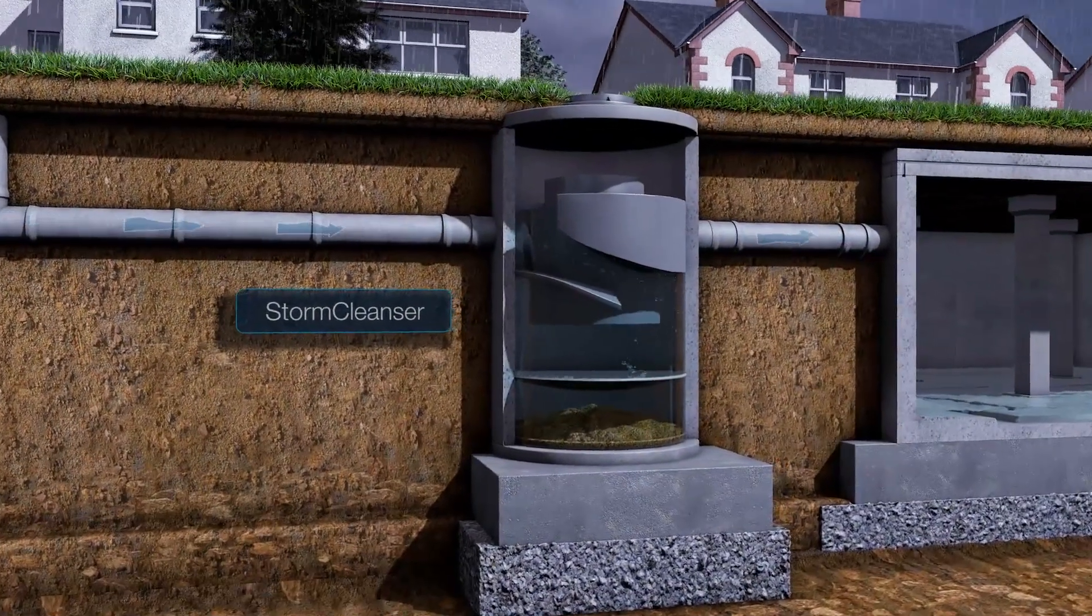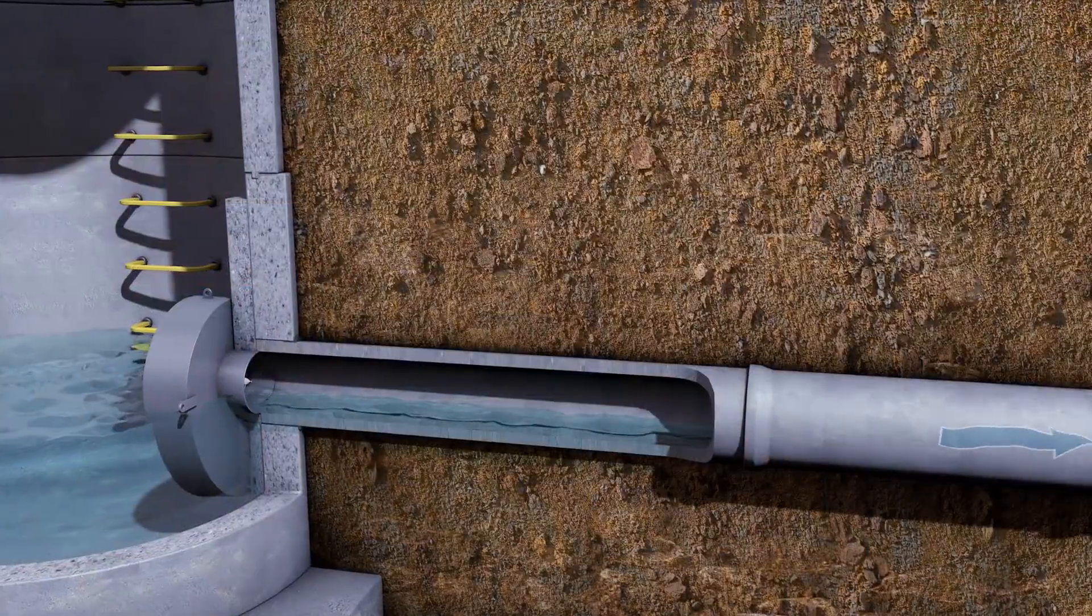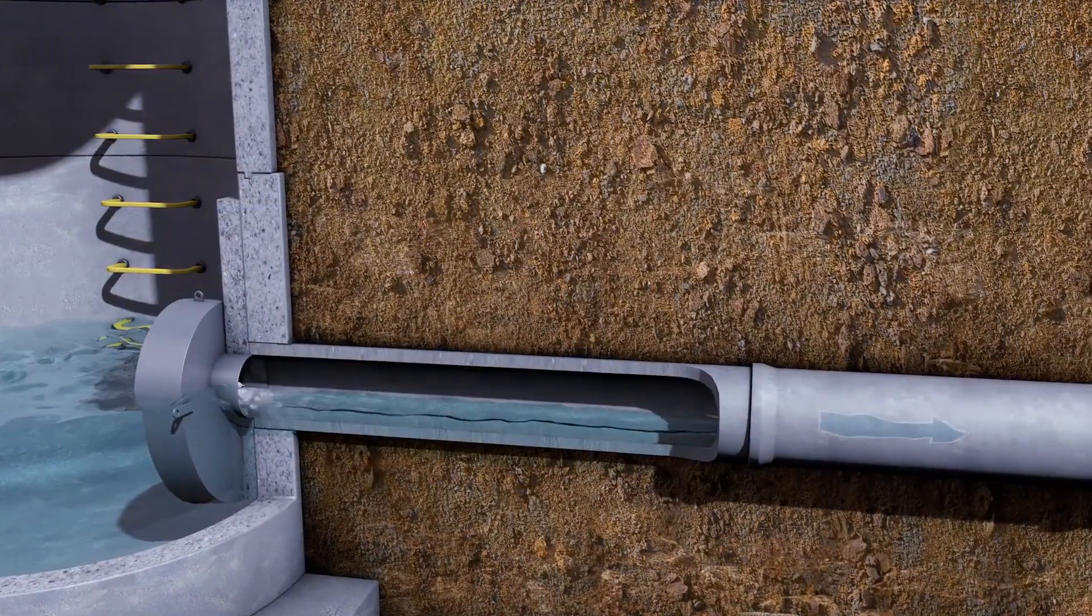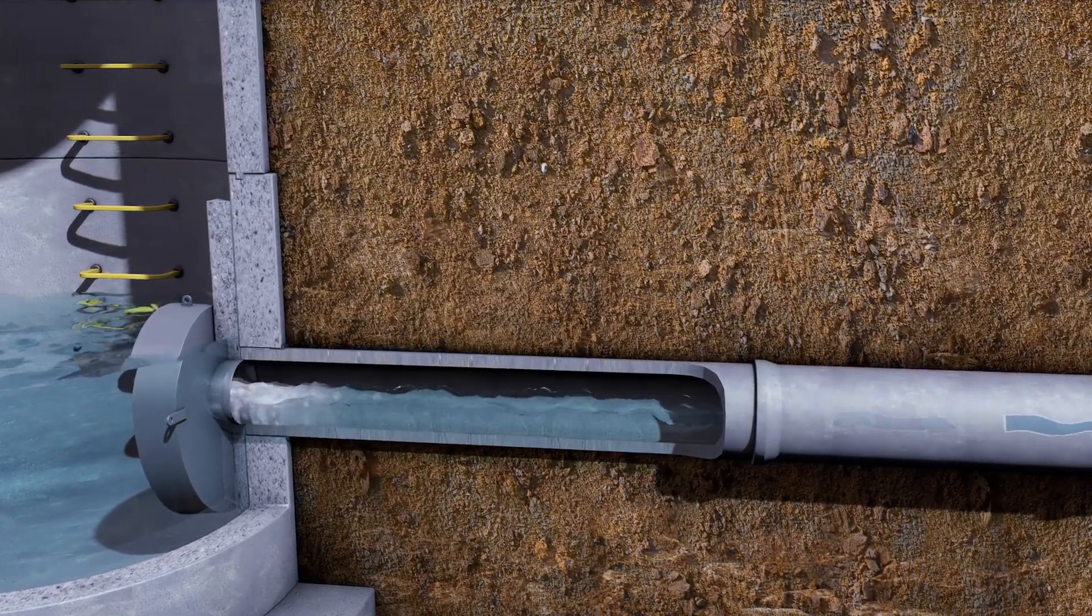At the beginning of a storm, the water level in the drainage system starts to rise. Water passes through the stormbreak with minimal flow restriction. This phase continues until the flush flow point is reached.